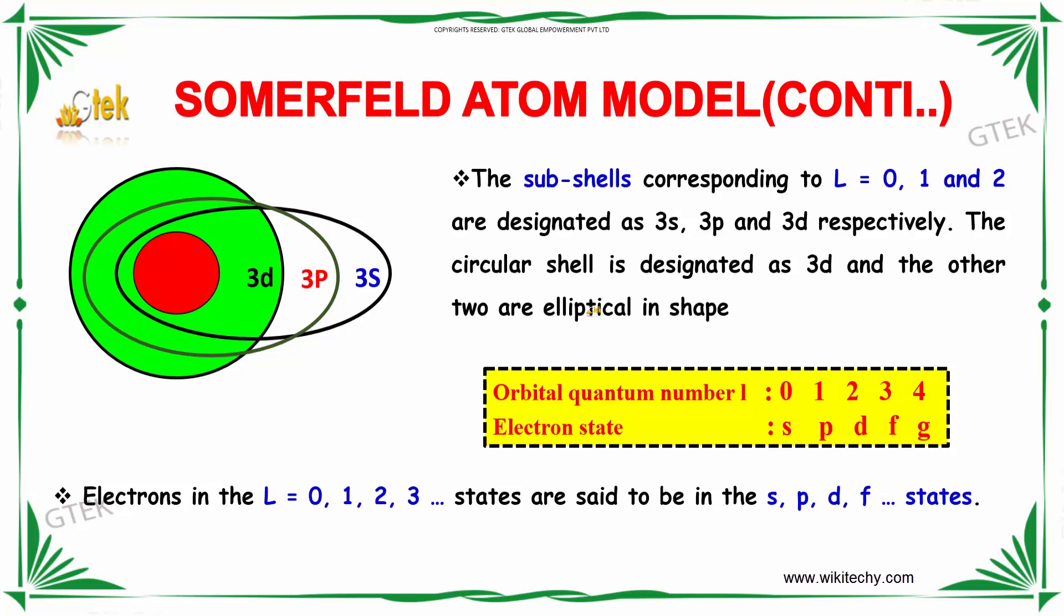The subshells corresponding to L=0, 1, and 2 are designated as 3s, 3p, and 3d respectively. The circular shell is designated as 3d and the other two are elliptical in shape. The orbital quantum numbers are: 0 is s, 1 is p, 2 is d, 3 is f, 4 is g. Electrons in L=0, 1, 2, 3 are said to be in s, p, d, f states.